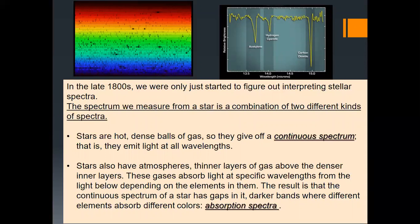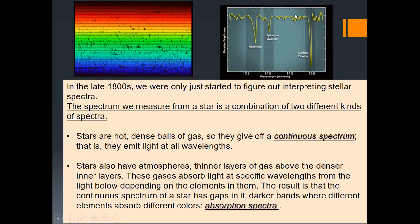In the late 1800s, we were just beginning to figure out how to interpret stellar spectra. In this diagram, you see the stellar spectrum with a combination of absorption spectrum and emission spectrum — this graph shows relative brightness versus wavelength of the stars. By observing the variation of intensity, we can decide what's going on with the temperatures and colors of the stars.